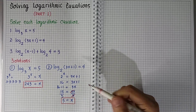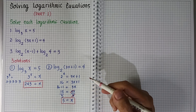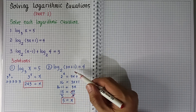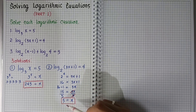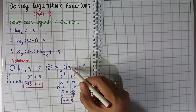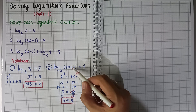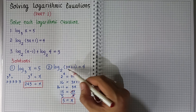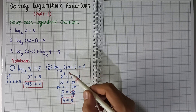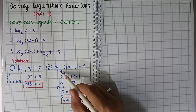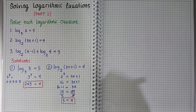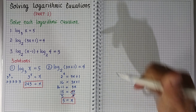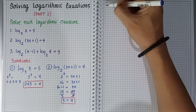To check: plug in x = 5. So 3 times 5 equals 15, plus 1 equals 16. And 2 to the 4th power is also 16. The answer checks out. Next, number 3.